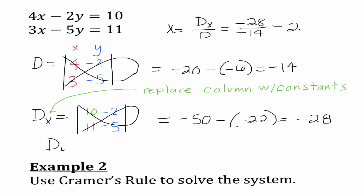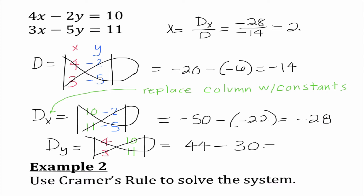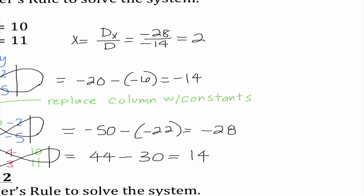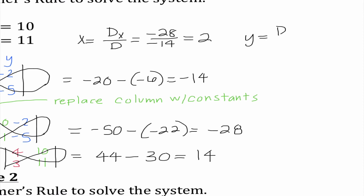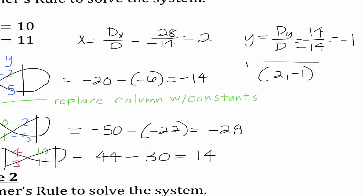Last, I'm going to find D sub y. This time I replace the y column with the constants — 10 and 11 in the y column. The x column keeps our x coefficients. 4 times 11 is 44. Mr. Determifish says subtract, baby. 10 times 3 is 30, so I get 14. To find y: D sub y divided by D is 14 divided by negative 14, which is negative 1. So our solution is (2, negative 1).